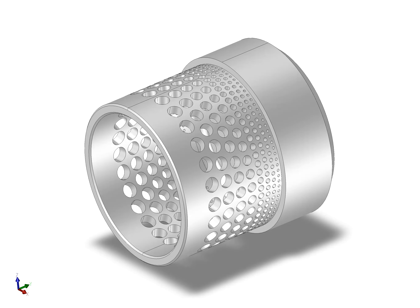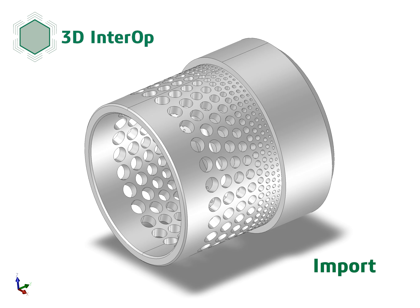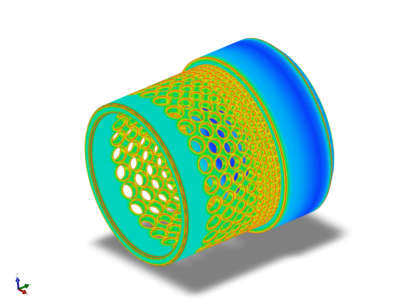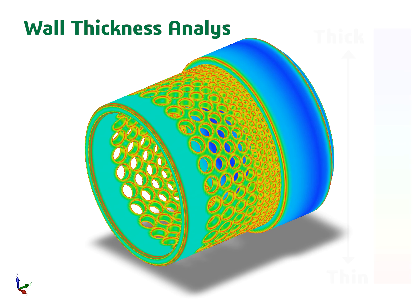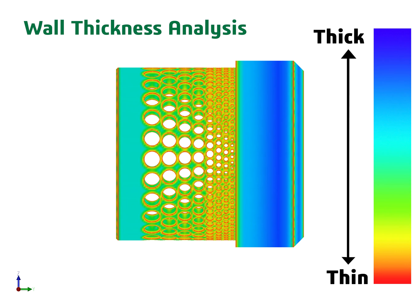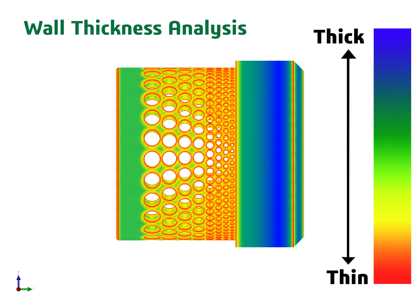Additive manufacturing workflows usually start by importing CAD models using Spatial's 3D Interop. Next, we analyze the wall thickness of this model to identify thin areas which can cause printability issues. To better visualize, we can use custom color scales in the wall thickness operator.